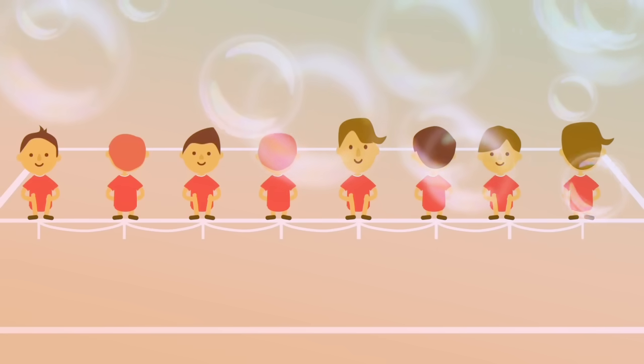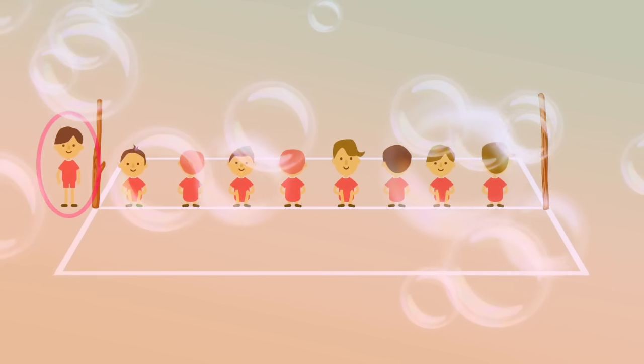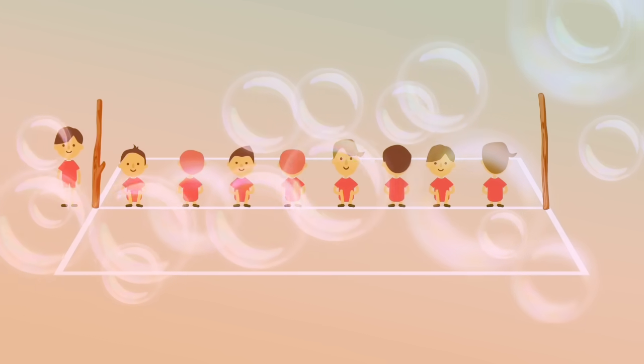The players alternately face opposite directions, away from the center line. The ninth player, who is the chaser, stands next to a pole.